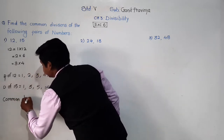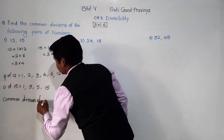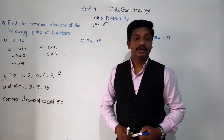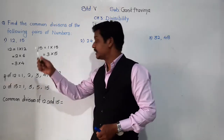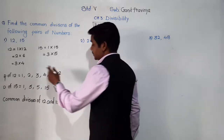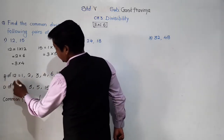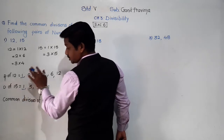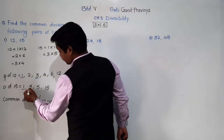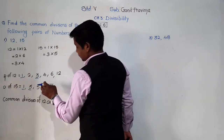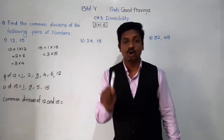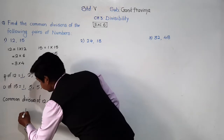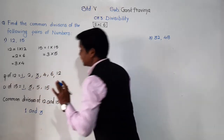Now let's find common divisors of 12 and 15. Common divisors means the numbers which are divisors of both 12 and 15. Let's underline such divisors: 1 is a divisor of 12 and also of 15, so it is common. 2 is a divisor of 12 but not of 15, so it is not common. 3 is a divisor of both 12 and 15. So only 1 and 3 are the common divisors of 12 and 15. This is our answer.